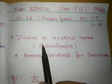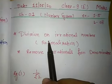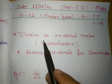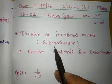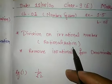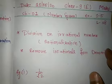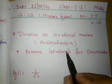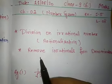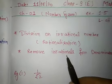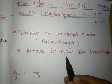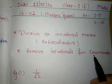Today's topic is Division on Irrational Numbers. In short, it is also called Rationalization of Irrational Numbers. In this topic, our main goal is to remove irrationals from denominators.